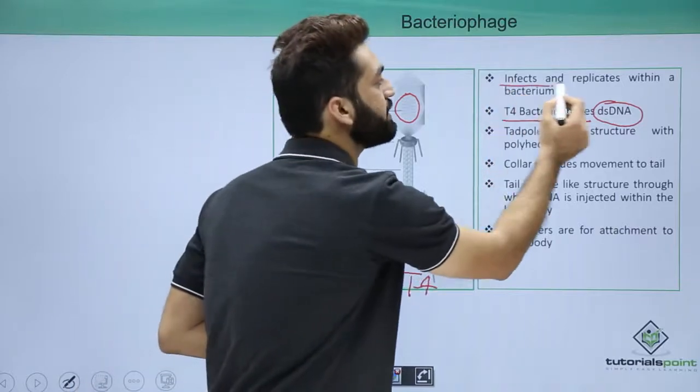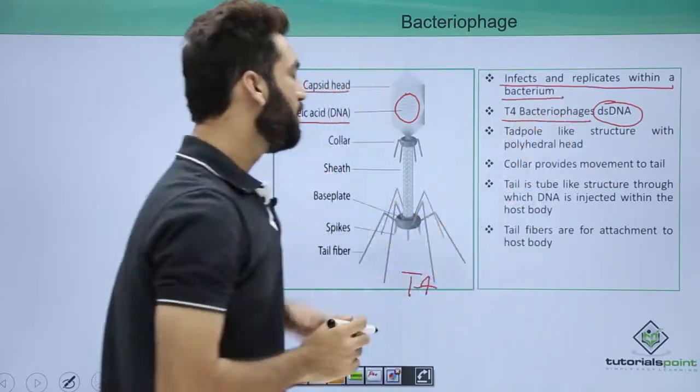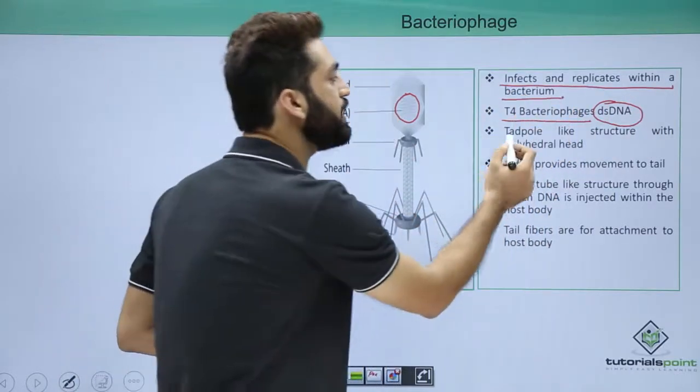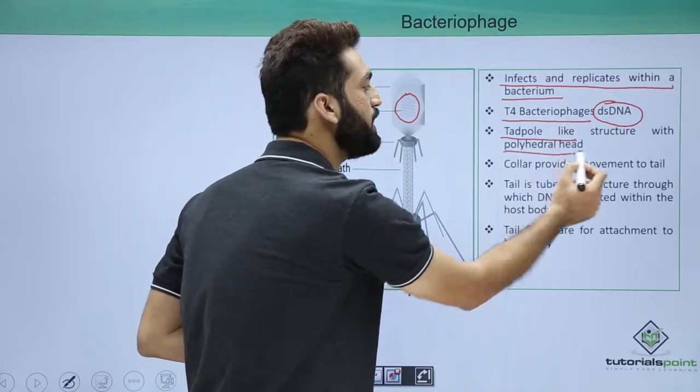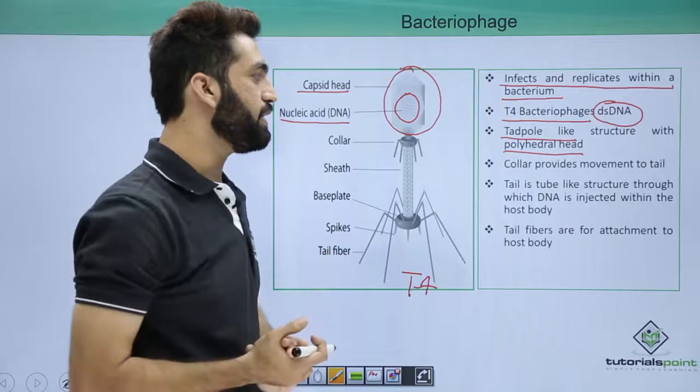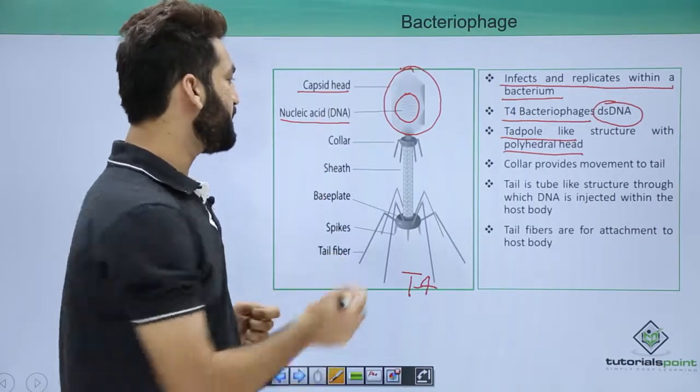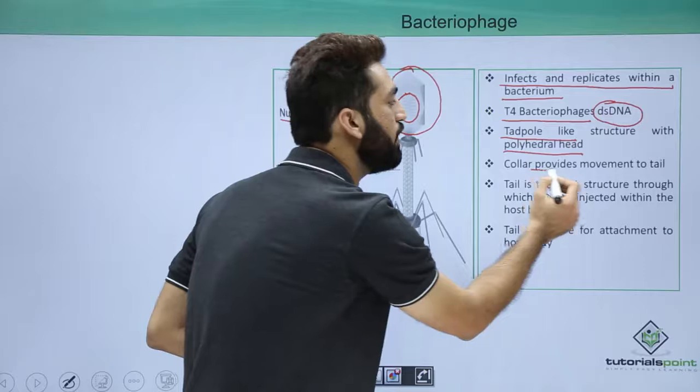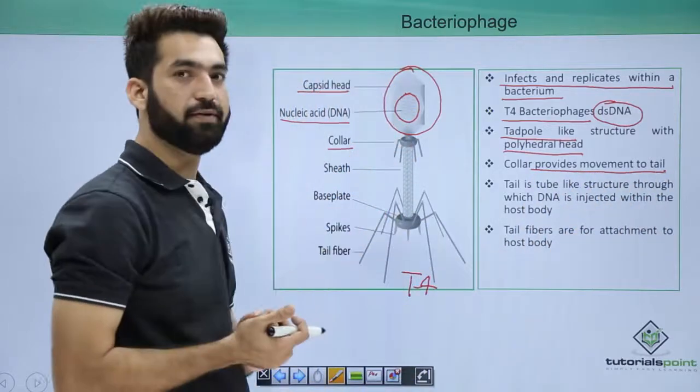I've told you that it infects and replicates within the bacteria. The structure, if you can look, it's a tadpole-like structure with a polyhedral head. You can look, this is the polyhedral head and the structure looks like a tadpole. There are various structures present, like you have the collar. The collar provides the movement to the tail.